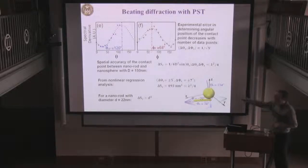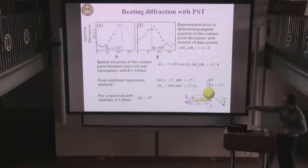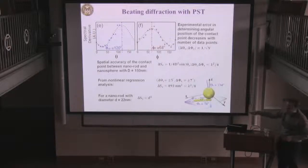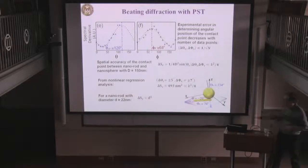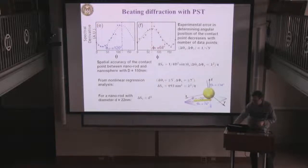One can estimate the accuracy of determining the contact point between the rod and the nanosphere, and it turns out you can do this measurement with an accuracy of only 20 nanometers — which is really amazing, since the diameter of the rod itself is 22 nanometers. So the definition of a contact point can only be applied with that accuracy anyway. This is a far-field measurement that allows you to achieve a resolution that cannot even be achieved using near-field measurements.